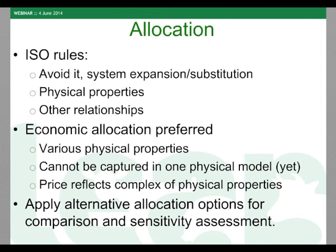Economic allocation was chosen not because it should be the one approach, but based on the complex situation that feed is valued for multiple functions — for energy, protein, other nutrients, and sometimes anti-nutritional factors. These various physical properties cannot be captured in one physical model yet. At this moment we say the price is a good reflection of this complex set of properties. Alternative allocation options for comparison shall also be applied. In mitigation projects, once allocation is defined, the discussion moves straight to supply chain improvement.